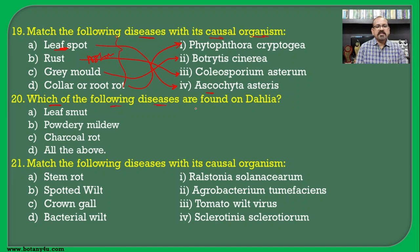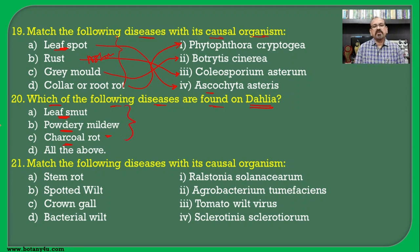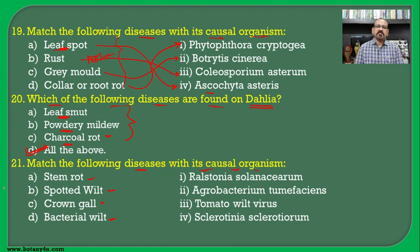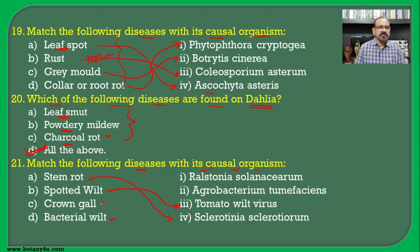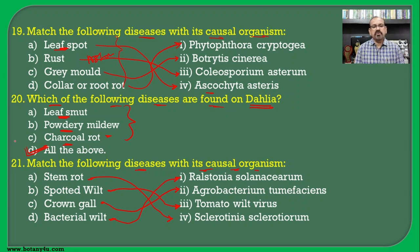Which of the following diseases are found on dahlia? Leaf smut, powdery mildew, and charcoal rot — the black rot found on dahlia — hence all the above are correct. Match the following diseases with their causal organisms: stem rot is caused by Sclerotinia sclerotiorum, spotted wilt by tomato spotted wilt virus, crown gall by Agrobacterium tumefaciens, and bacterial wilt by Ralstonia solanacearum.